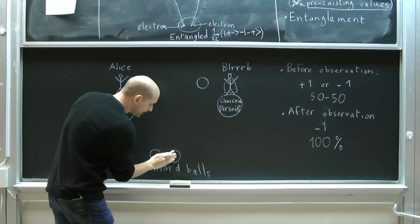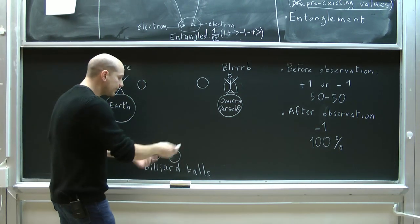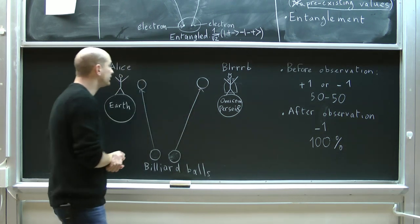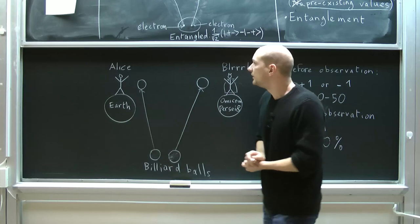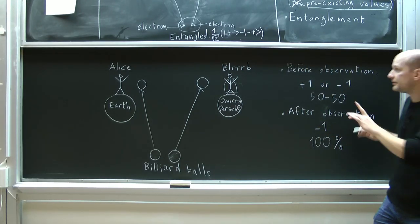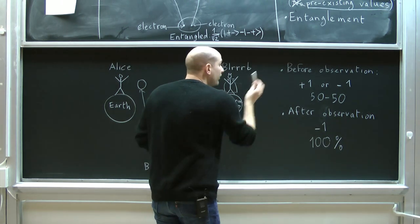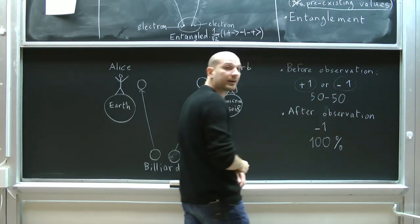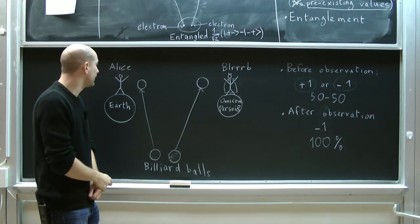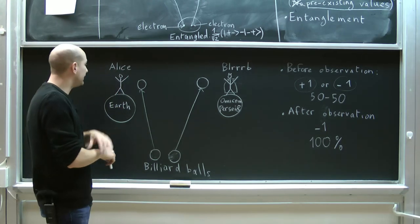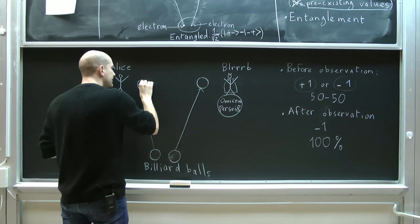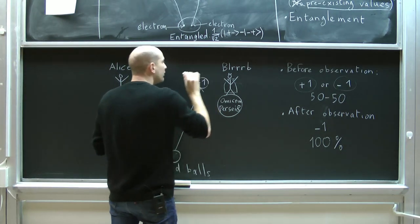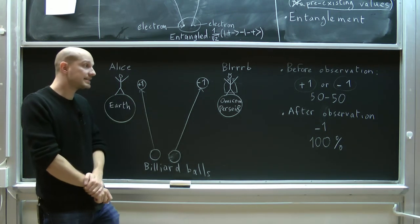Let's imagine that we hide these markings — but the markings exist. We mix up the billiard balls so that we don't know which one is which, and then we give one ball to Alice and the other to Blurb. Before looking at the billiard ball, Blurb's ball is in a situation in which it could either have the plus one or the minus one marking with 50-50 probability. But if Alice observes the marking on her billiard ball and sees that she has the plus one ball, then immediately — instantaneously — Blurb's ball is now in a state where it necessarily has the minus one marking.